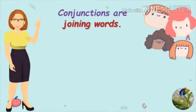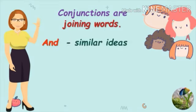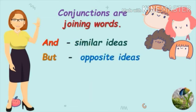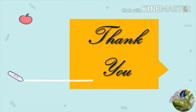So, children, in today's class, what did we learn? We learned that conjunctions are joining words, and we have seen the usage of three conjunctions: we use AND to join similar ideas, we use BUT to join opposite ideas, and we use OR whenever we want to make a choice. Well done, children. Remember: AND, BUT, OR — AND to join similar ideas, BUT to join opposite ideas, and OR to make a choice. I hope my children have been able to follow the usage of conjunctions. Thank you, children. Goodbye and see you soon.